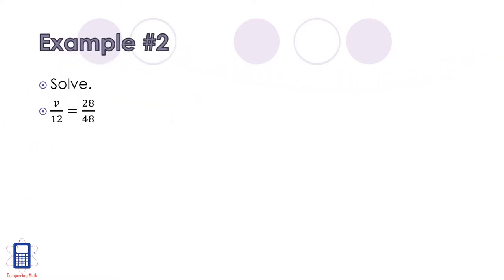In example number two, we need to solve for v. v over 12 equals 28 over 48. We could cross multiply here, but it's actually simpler just to get rid of the denominator of 12. So what we'll do is we'll multiply both sides by 12, and then we'll simplify down, you can use a calculator for this step, and you'll find that v equals 7.